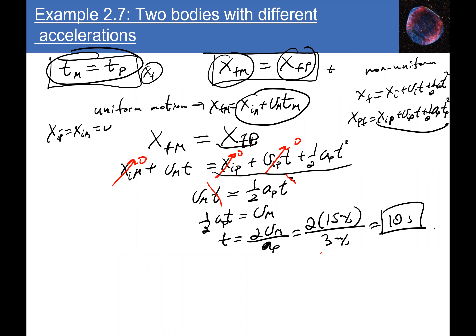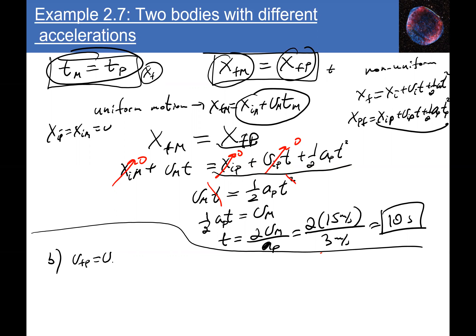For part (b), the officer's speed at that instant: v_final = v_initial + a·t = 0 + 3(10) = 30 meter per second. The officer was moving at 30 m/s when catching the motorist — well above the speed limit, but officers don't get tickets.